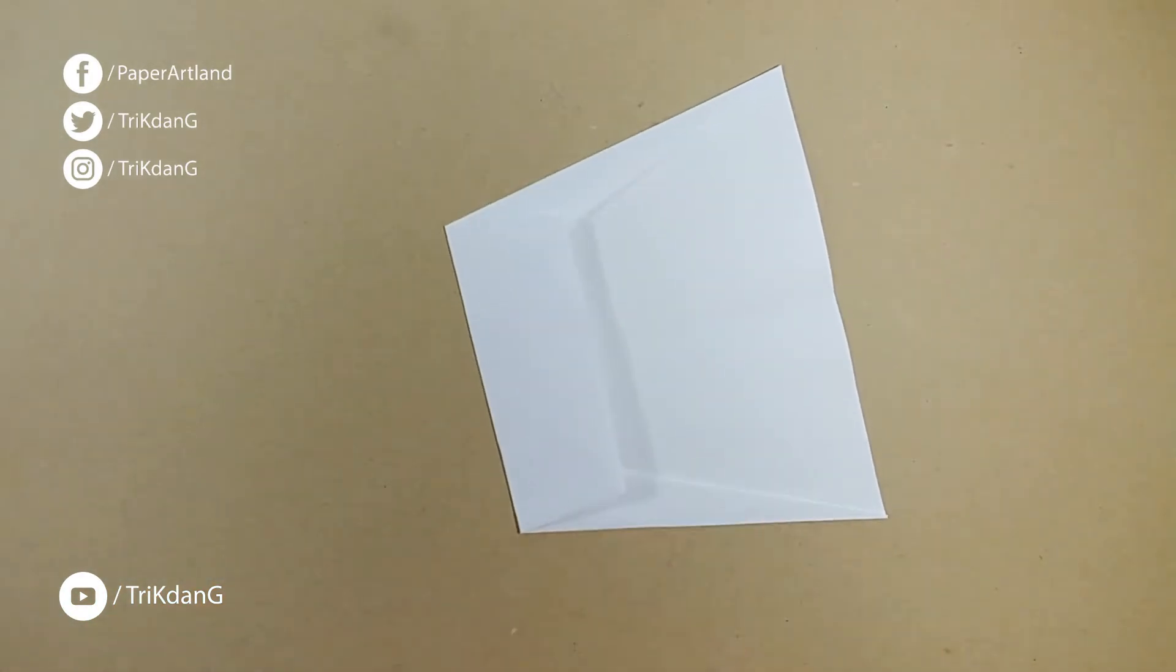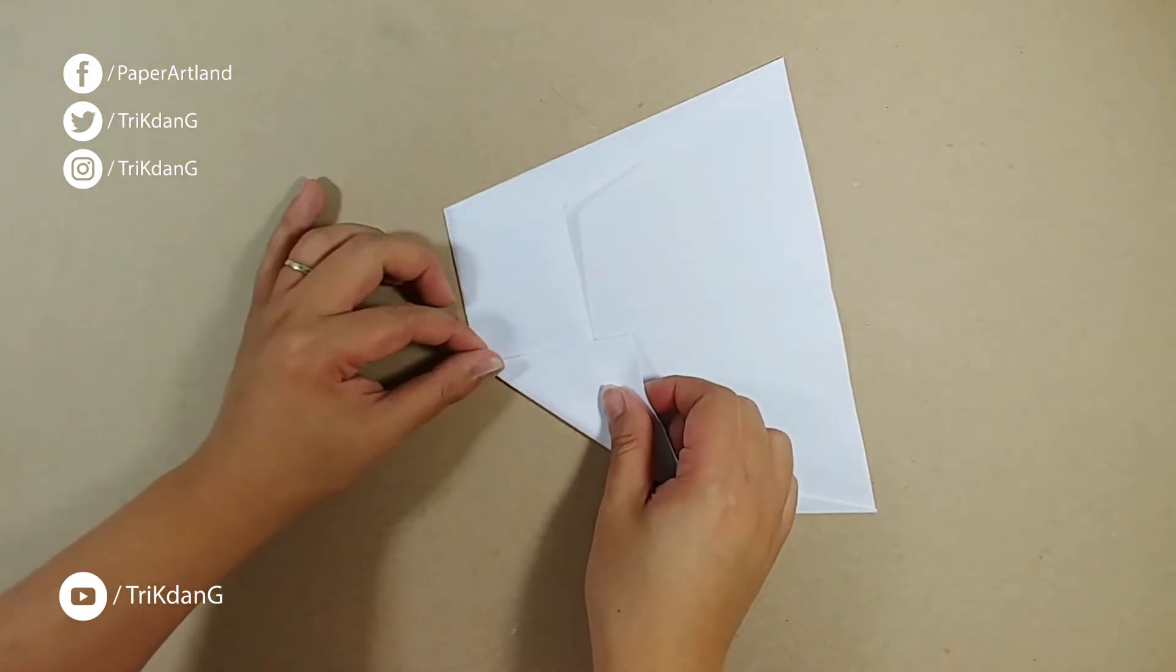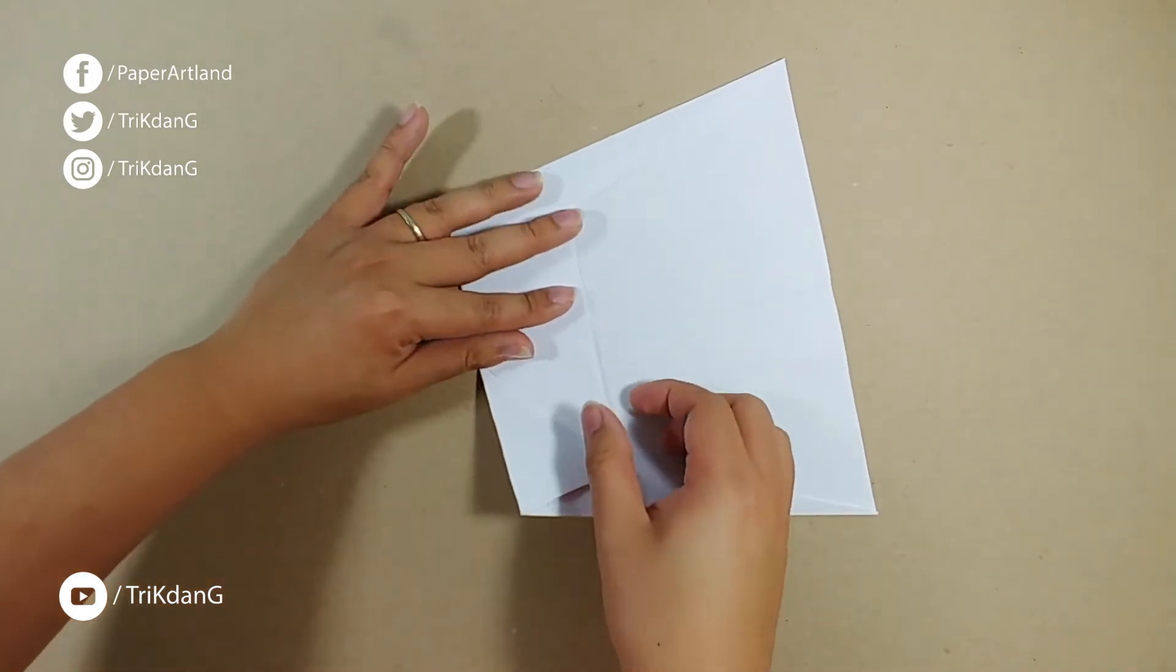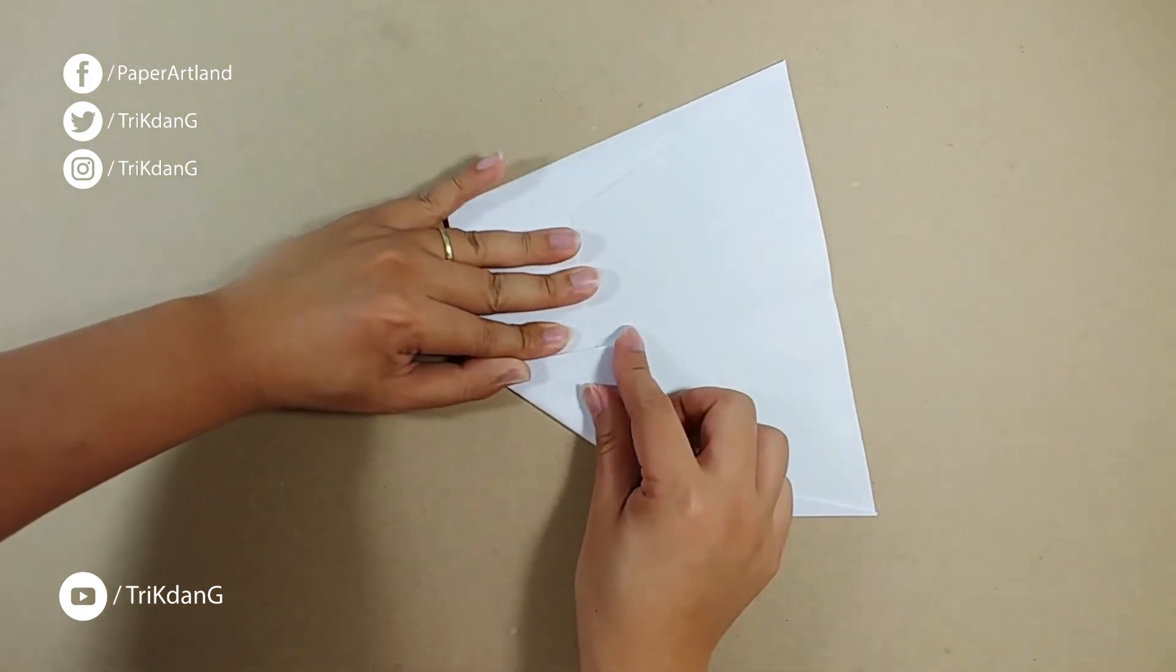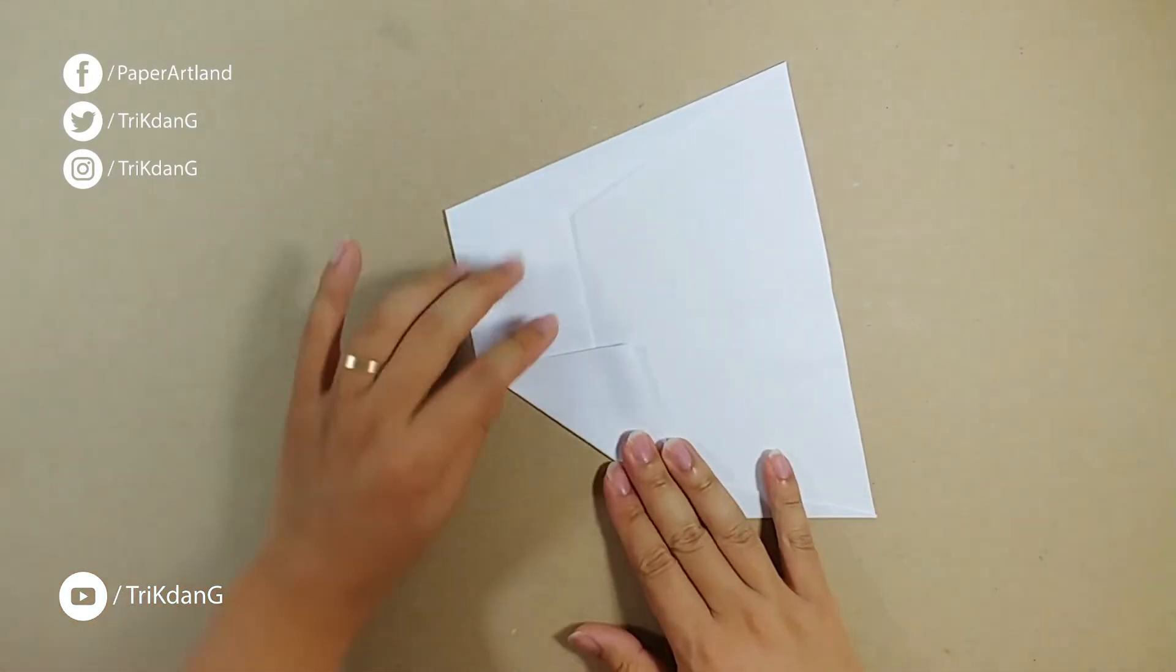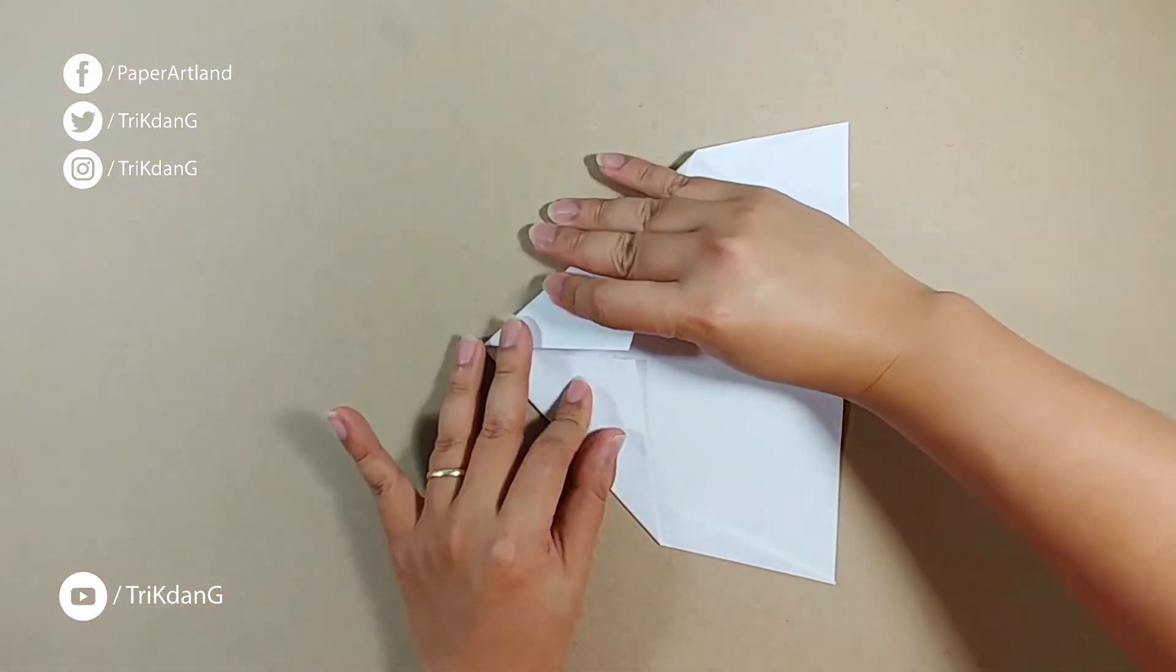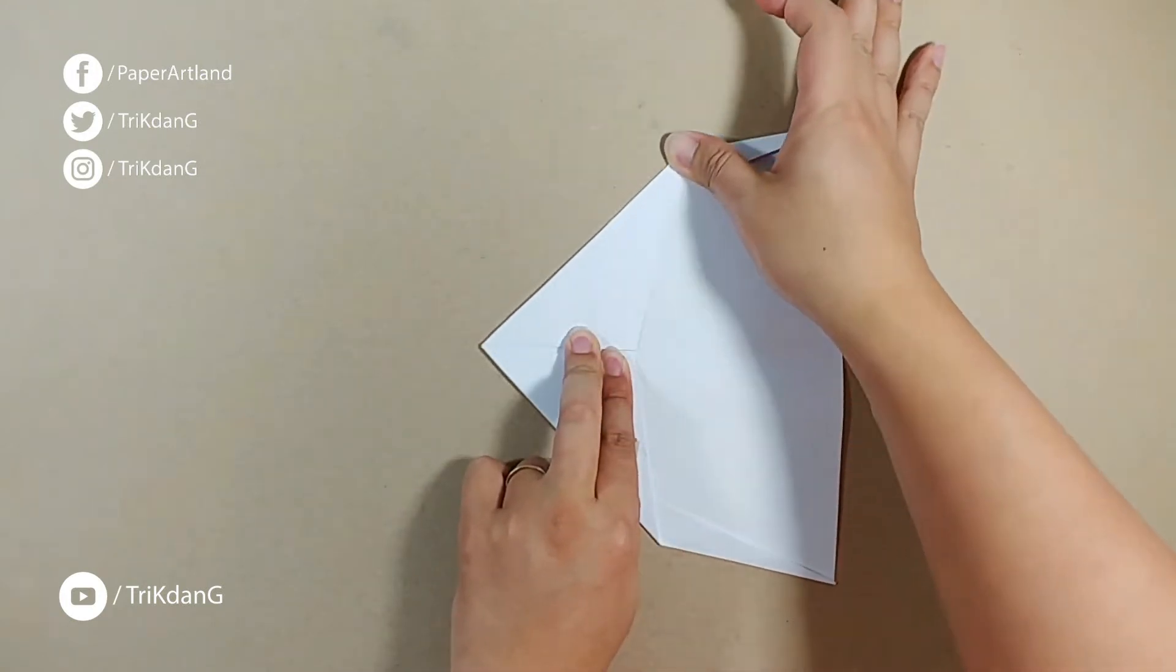Once you fold both sides of the paper, now let's start from both sides of the paper. Fold it to the center crease. Make sure that you leave a small gap between the edge and the center crease. And when you fold to the center crease, this paper may be moved a little bit. That's why you need to hold it. Okay. I finished this side, and now I repeat the same fold for the other side. And I leave a small gap too. And I press the paper down. Okay.